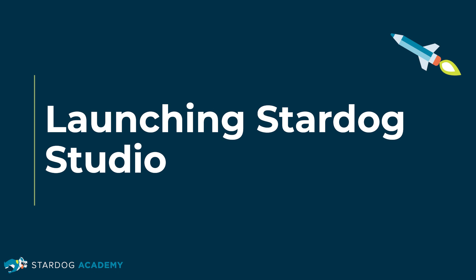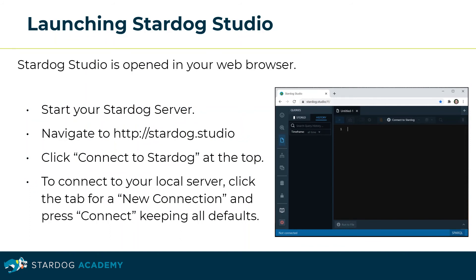This section is about how to launch Stardog Studio, which is an IDE for knowledge graph engineers that's also designed to make Stardog functionality easier to use for everyday users. Stardog Studio is opened in your web browser. First, start your Stardog server. In the browser, navigate to http://stardog.studio. Click Connect to Stardog at the top, then to connect to your local server click the tab for a new connection and press Connect keeping all defaults. This concludes the section about launching Stardog Studio.